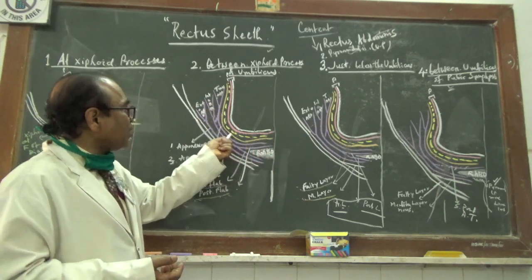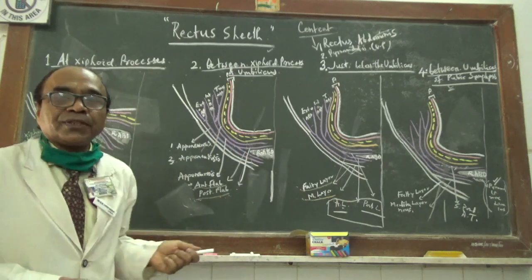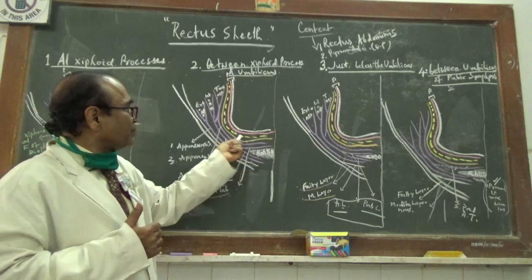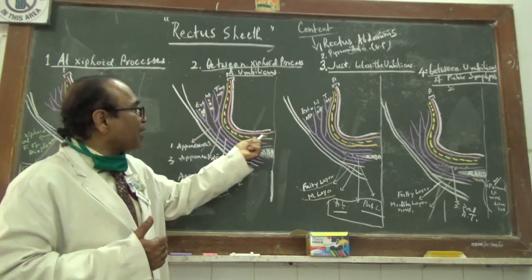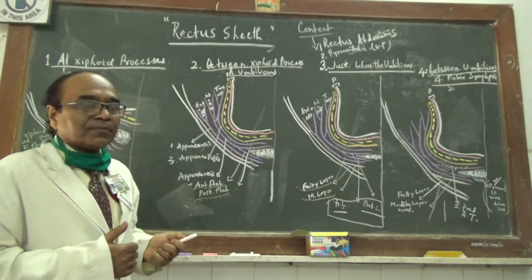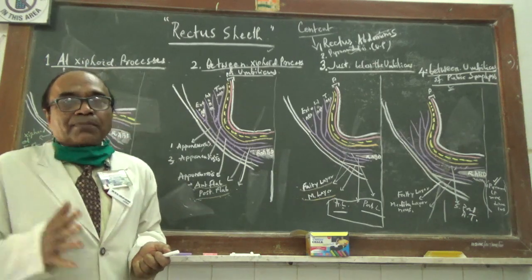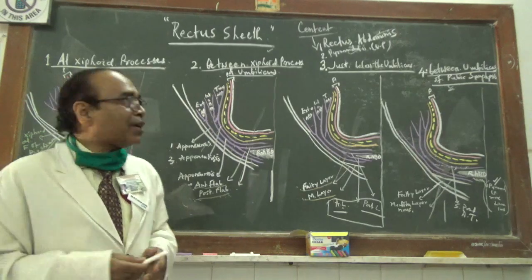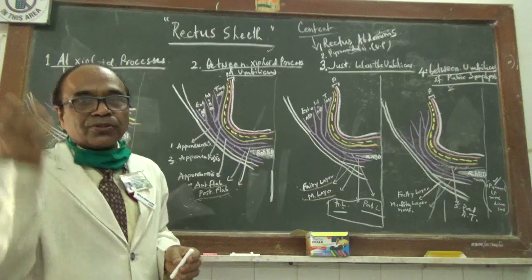Internally at this level, the transversalis fascia is shown in orange, as explained at the xiphoid level. Behind that lies the extraperitoneal fat (yellow dotted line), and then the peritoneum. The peritoneum here is shown in red for the parietal layer and white for the visceral layer, which covers all the abdominal viscera and partially lines the entire body cavity.